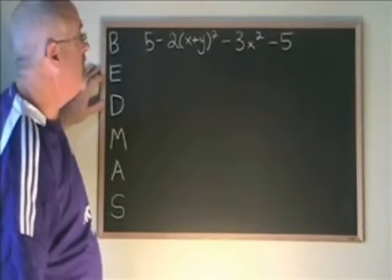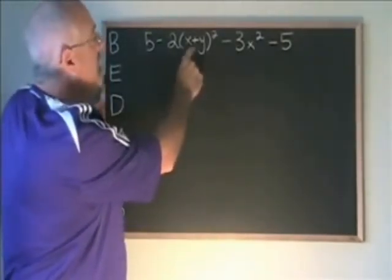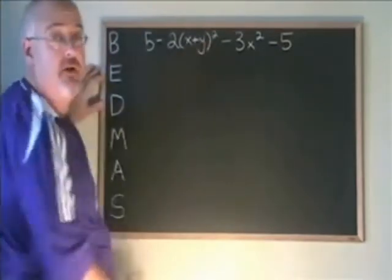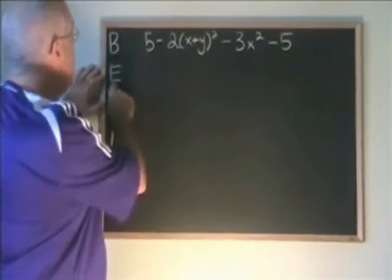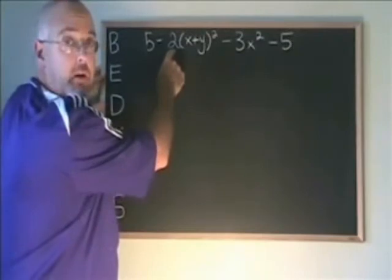In this example, we have a bracket which cannot be simplified inside. The bracket is there to show both a squared binomial and a multiplication. The E for exponent comes before the M for multiplication, so we are not going to multiply by 2 yet. We are going to square the binomial first.